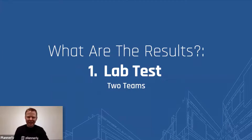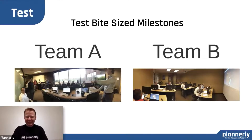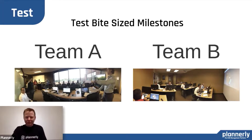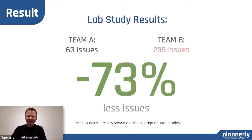We had a couple of case studies — very quick. One was a lab study with two teams, Team A and Team B. They went through two exercises: one running a traditional process and then evaluating issues afterwards, and the second where they had a communication about sequencing and then ran in mini phases. It was astonishing — we saw a 73% reduction in the number of challenges and issues that needed to be resolved. That was a big aha moment.